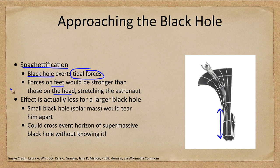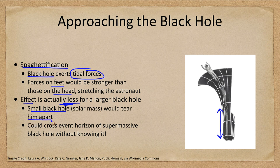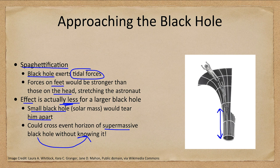These differential gravitational forces exert tides on the Earth, and they can rip objects apart if they get too close to a source of strong gravity. Interestingly, this effect is actually less for a larger black hole. A small black hole would tear an astronaut apart, but with a supermassive black hole you wouldn't even know it — you could cross the event horizon without even knowing that you did so, since the event horizon gets further and further from the singularity. It's quite possible with a really massive black hole that you could cross the point of no return and not even know it.